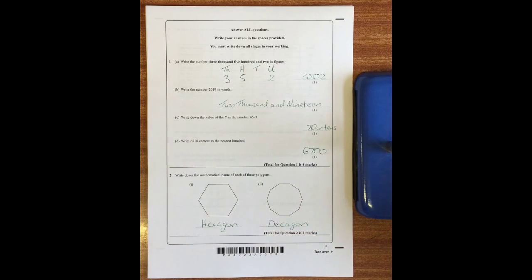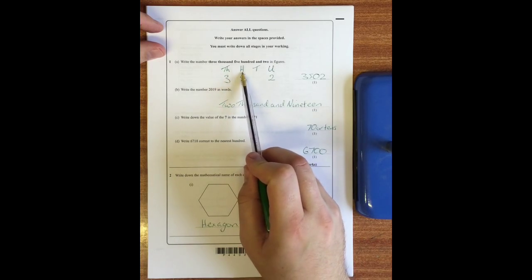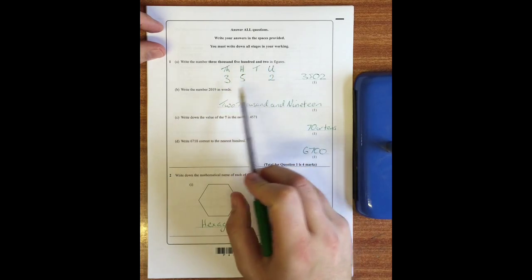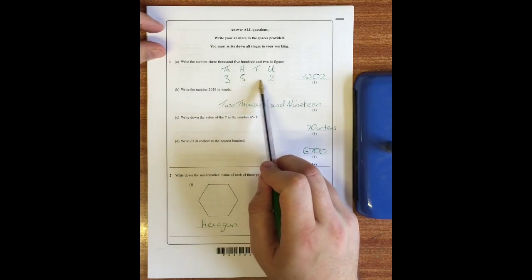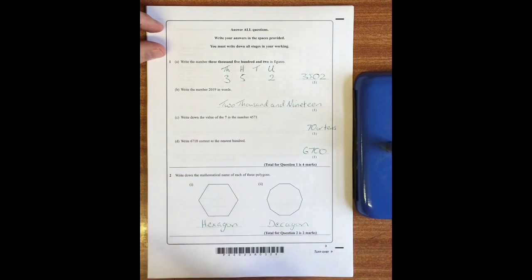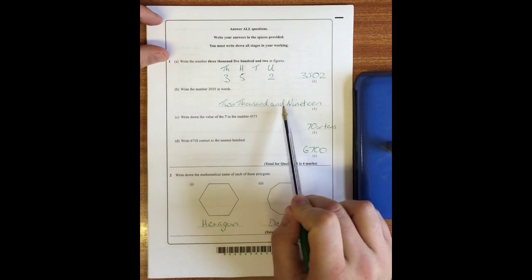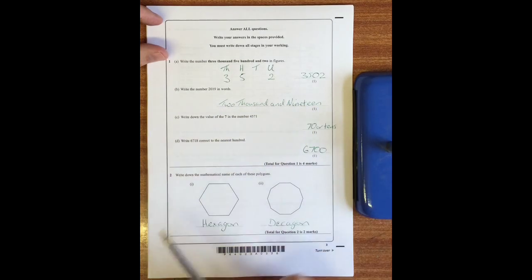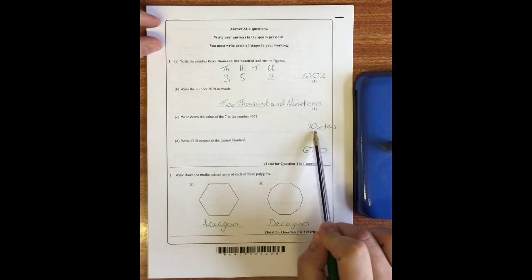Question one: write the number three thousand five hundred and two in figures. To help me do this I'd like to bring down the place value settings, so thousands, hundreds, tens, and units. Three thousand five hundred and two - you can see that there are no tens in there, but you still need to put a zero in, so 3502. Write the number 2019 in words: that's two thousand and nineteen. Write down the value of seven in this number - well that stands for seven tens or seventy, either of these will be fine.